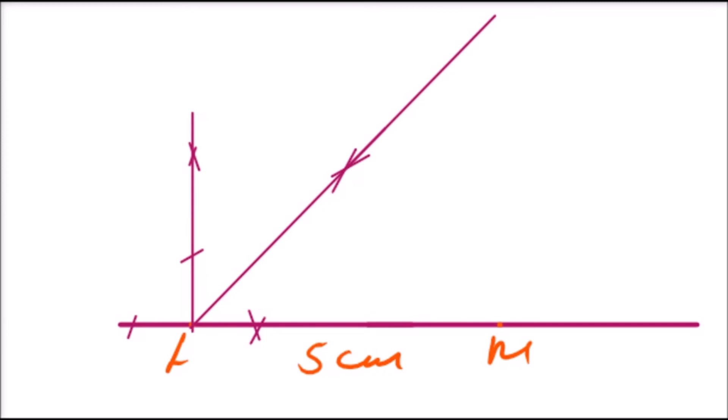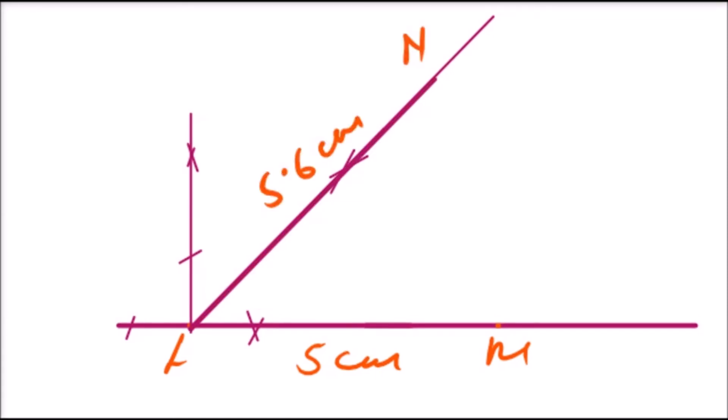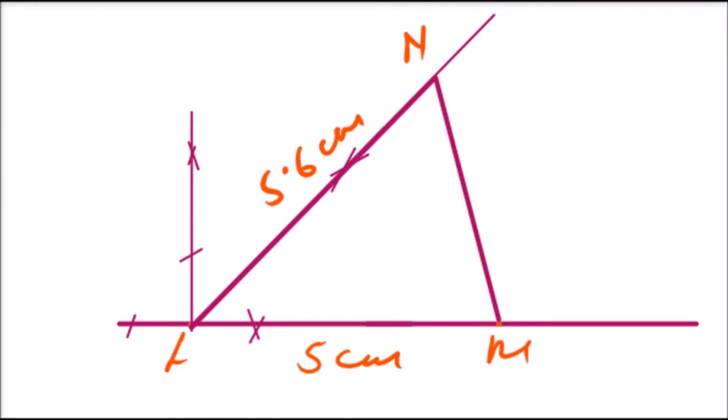Then what remains is to measure 5.6 cm to get the location of N, which I have done there. So that is 5.6 cm, then you can join N and M, so that you come up with a triangle. So that is our triangle L, M, N.